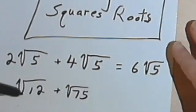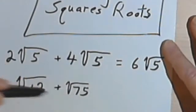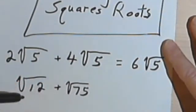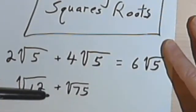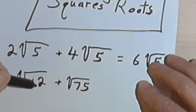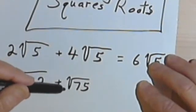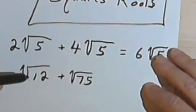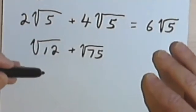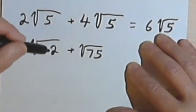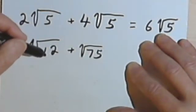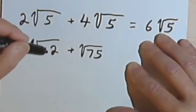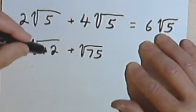I run into a problem if I have different square roots. This at first looks like it's impossible to do — I can't say I have 2 of either of these because they're both different. However, maybe I can simplify them and then find a way to add them together. So let's look at the square root of 12, remembering that I can factor a number and hopefully find one of the factors as a perfect square.